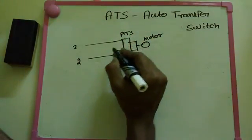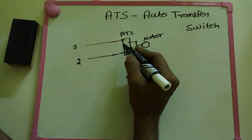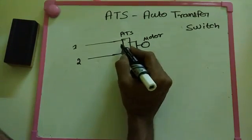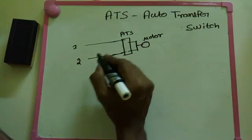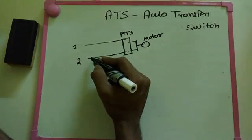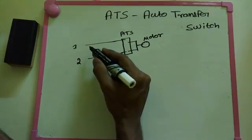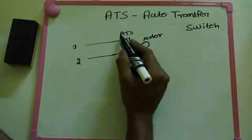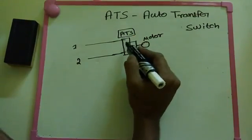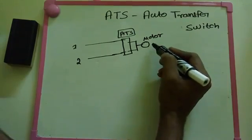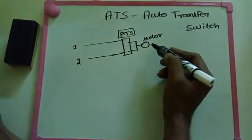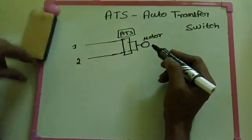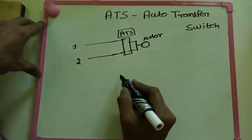So the motor needs to continuously run. This thing we need to make by using ATS. What's the function of this? An interlock will be placed here - that means the first one and second one don't operate at the same time. When the first one is switched on, the second one is switched off; when the second one is switched on, the first one is switched off. So any one of these two is switched on at a time. That's the main purpose of the ATS - to provide continuous power supply to the motor or any load.